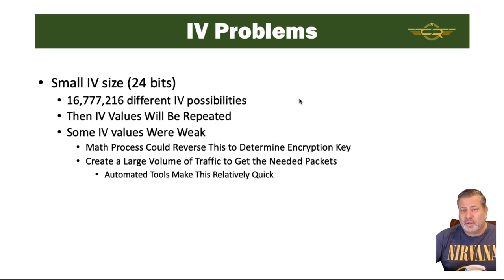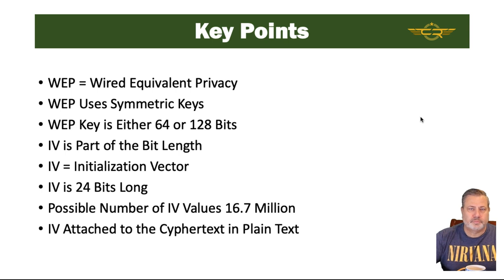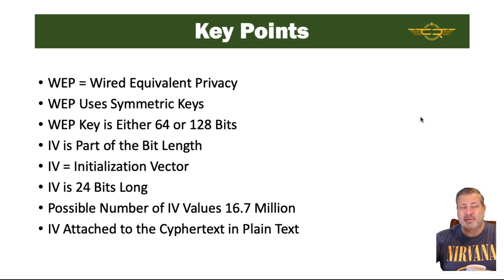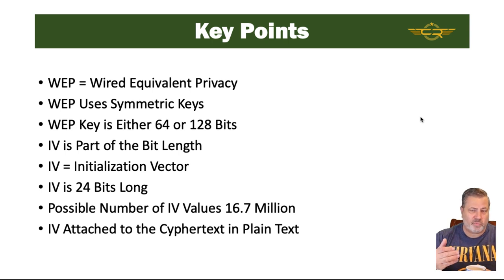That's why most new access points won't even allow you to use WEP — it's relatively insecure. For the exam: WEP is Wired Equivalent Privacy; WEP uses symmetric keys; the WEP key is either 64 or 128 bits; the IV is part of that bit length; the IV is 24 bits long; there are 16.7 million possible IV values; and the IV is attached to the ciphertext in plain text, making it a fairly weak protocol.